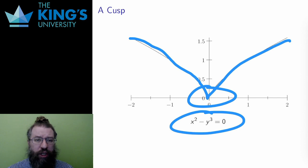So how can I determine, just from the equation, what kind of singularities are on a particular curve? And that's the question for the next video after this.